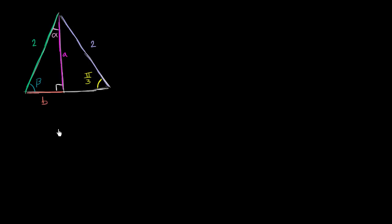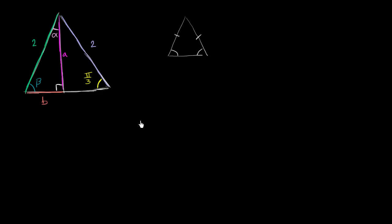So let's see what we can determine. We know two of the side lengths, and they're the same — they both have side length two — and we're given one of the angles: this yellow angle has a measure of pi over three radians. One thing that jumps out is that this is an isosceles triangle, which has two sides of the same length, meaning the corresponding base angles are also going to be congruent.